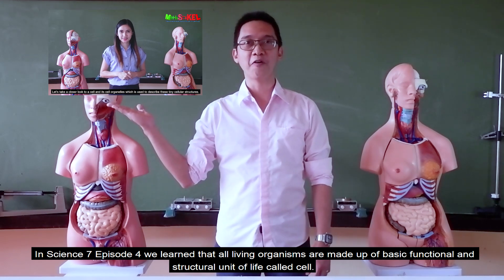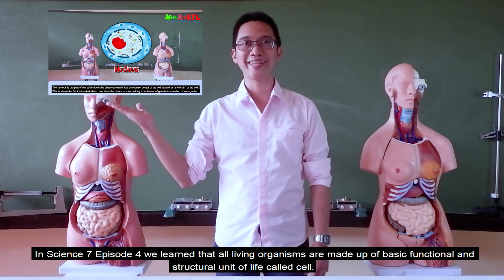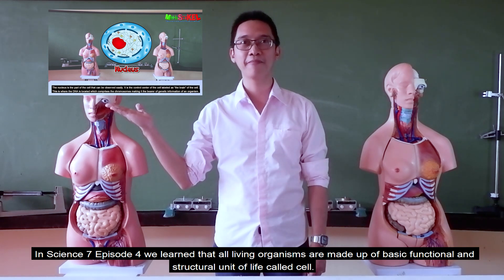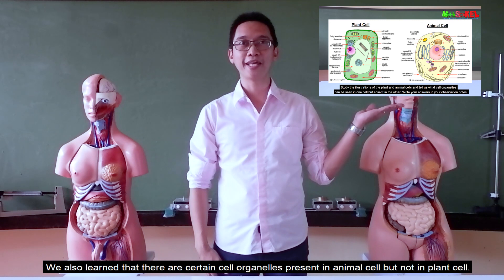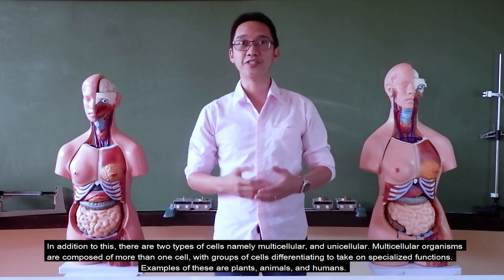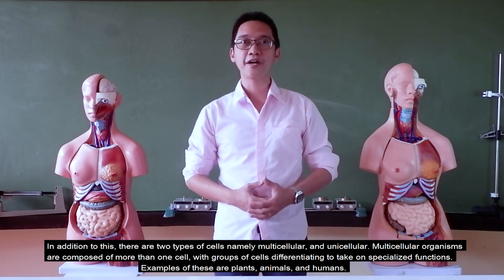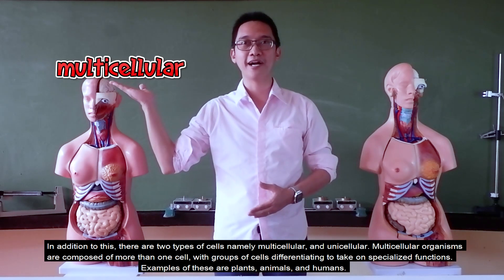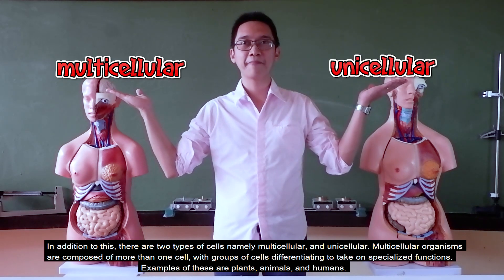In Science 7 episode 4, we learned that all living organisms are made of a basic functional and structural unit of life called a cell. We also learned that there are certain cell organelles present in animal cells but not in plant cells. In addition, there are two types of cells: multicellular and unicellular.